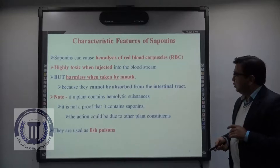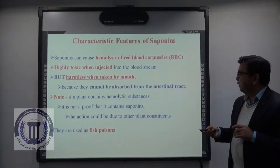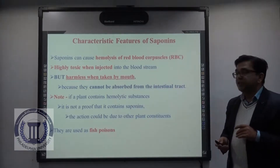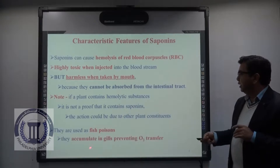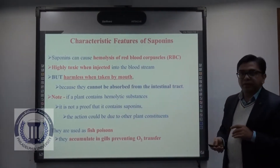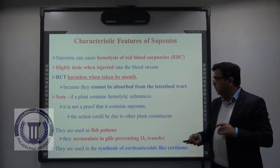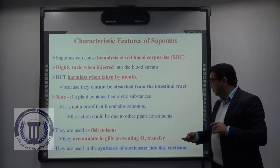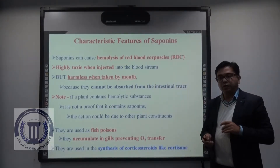Because of their hemolytic property, saponins are also used as fish poisons, where they accumulate in the gills and prevent oxygen transfer. They are also used in the synthesis of corticosteroids like cortisone.